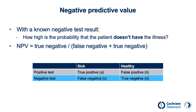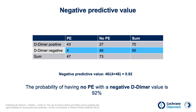The negative predictive value addresses the question: how high is the probability that a patient with a negative test does not have the illness? It is calculated by taking the true negative cases divided by the sum of the false negative and true negative cases. Therefore, the probability of having no pulmonary embolism with a negative D-dimer is 92%. In other words, 9 out of 10 patients with a negative D-dimer test also did not have a pulmonary embolism.